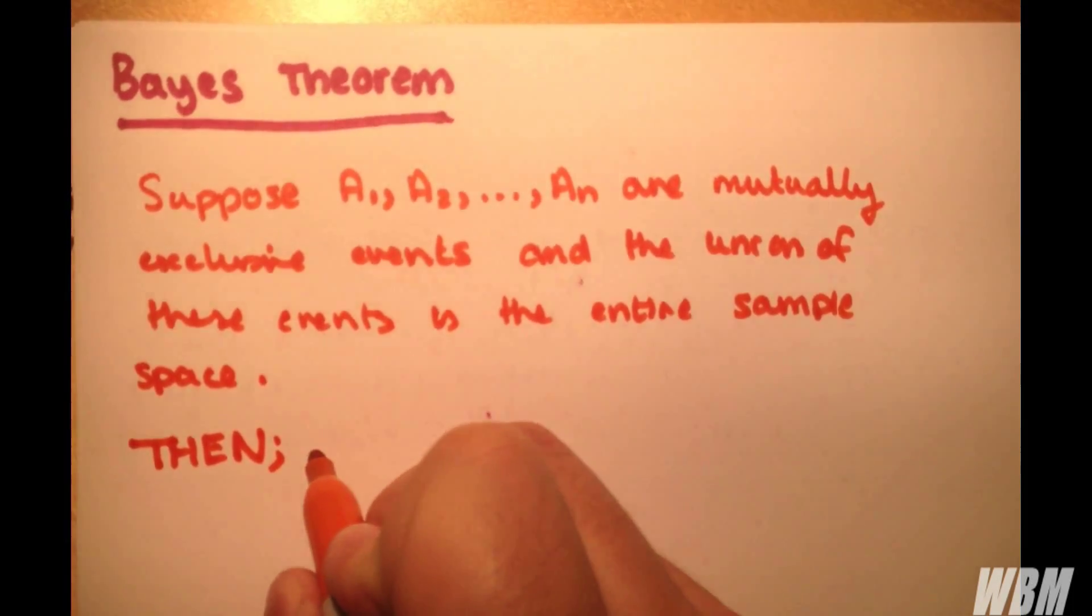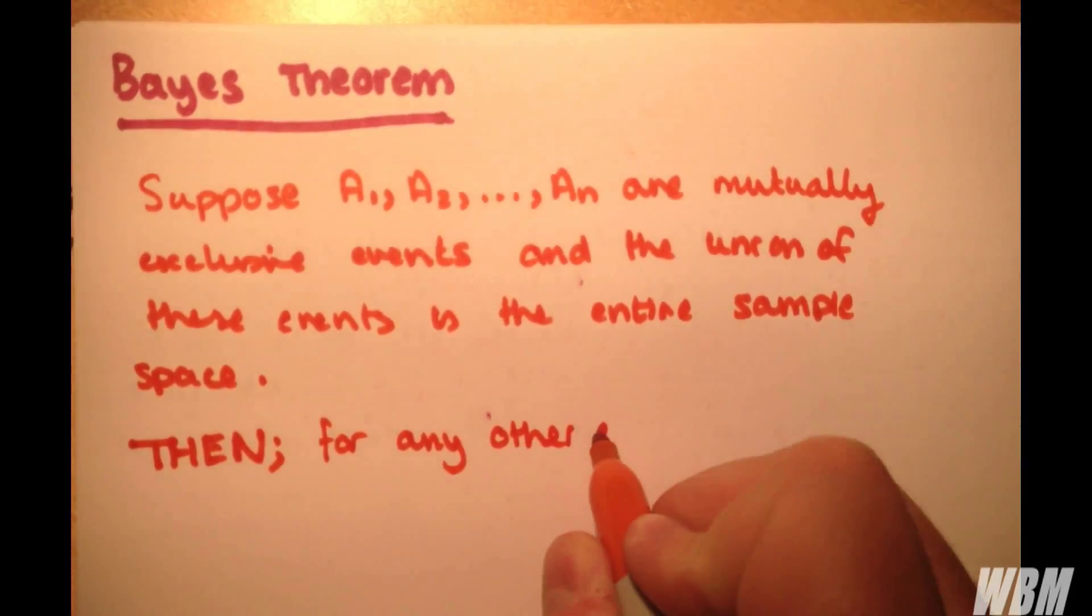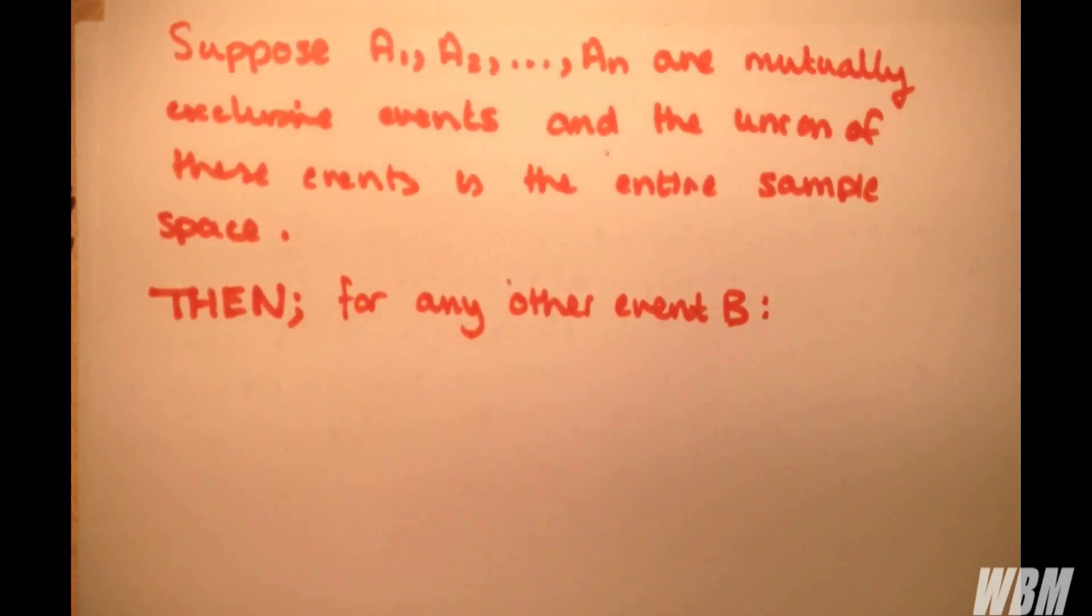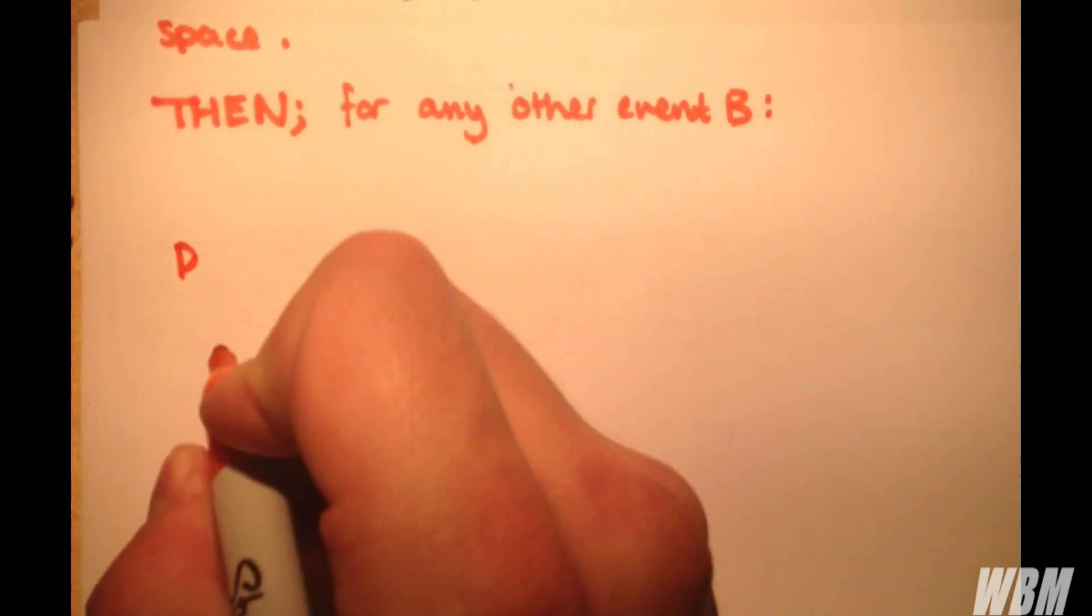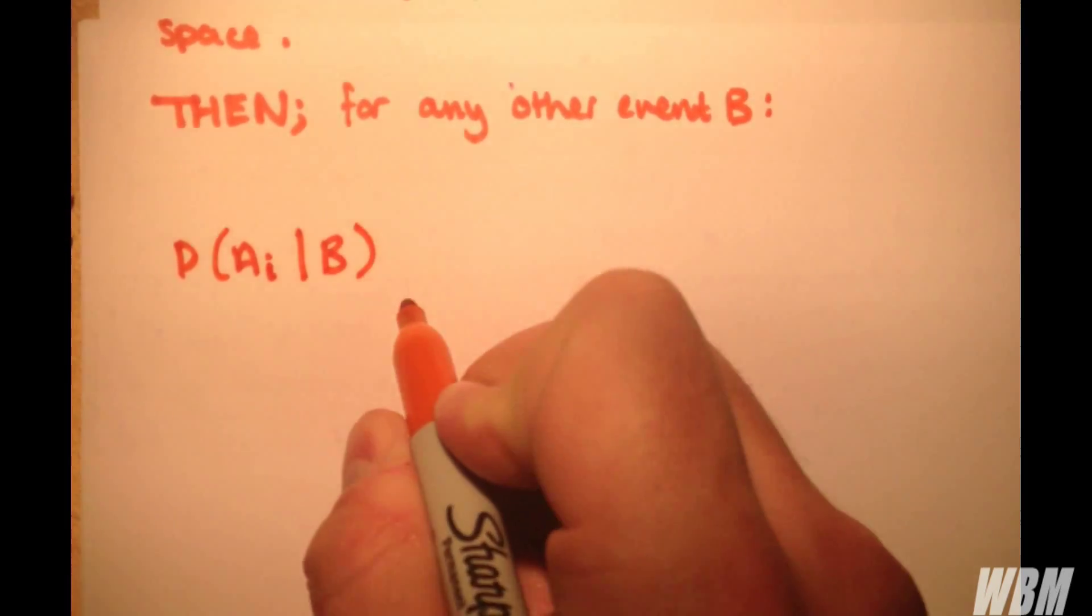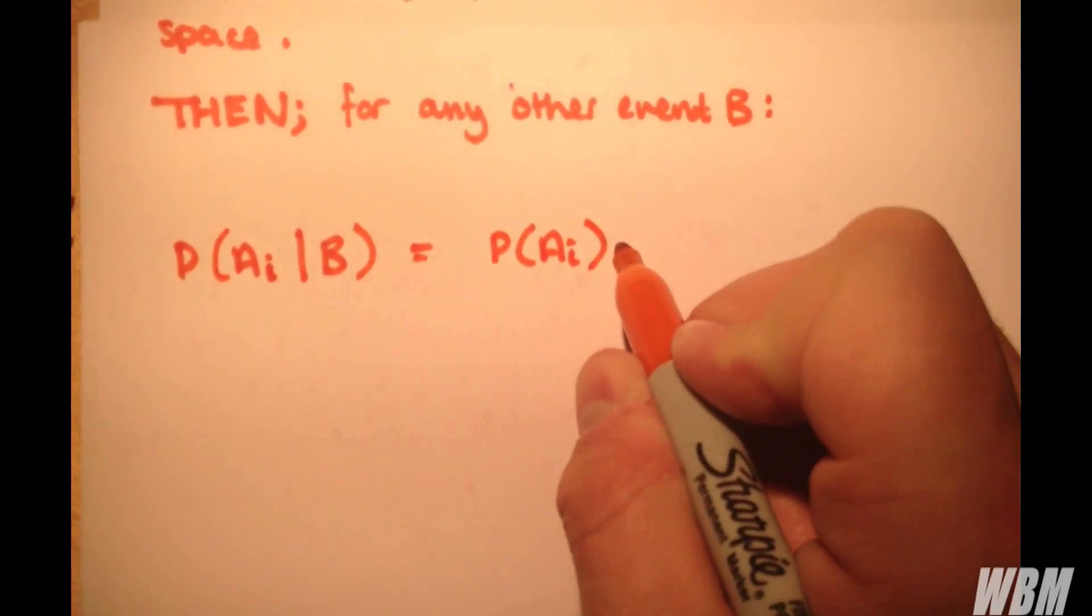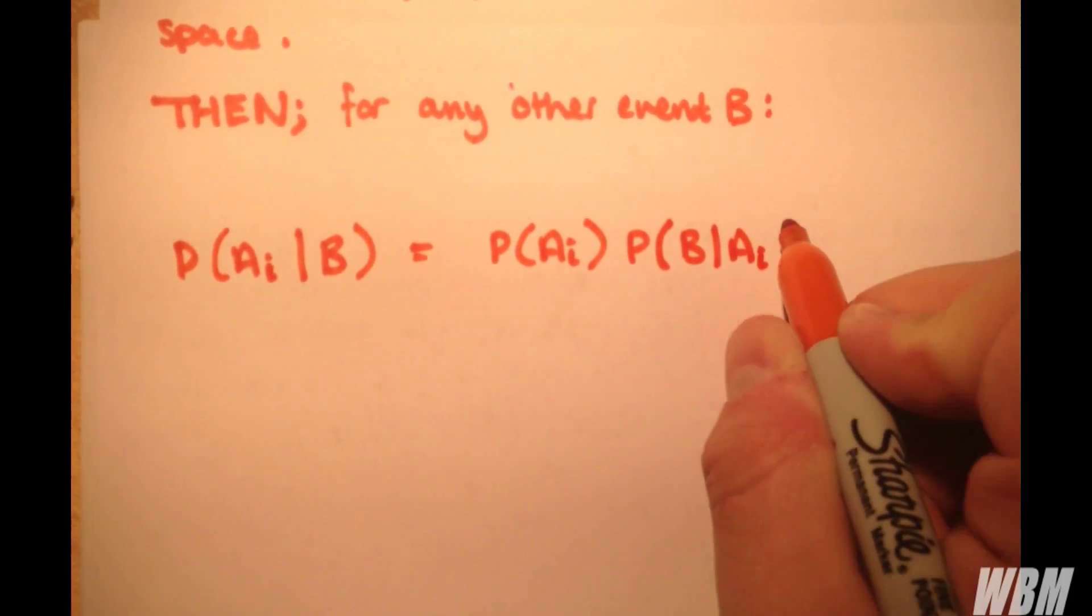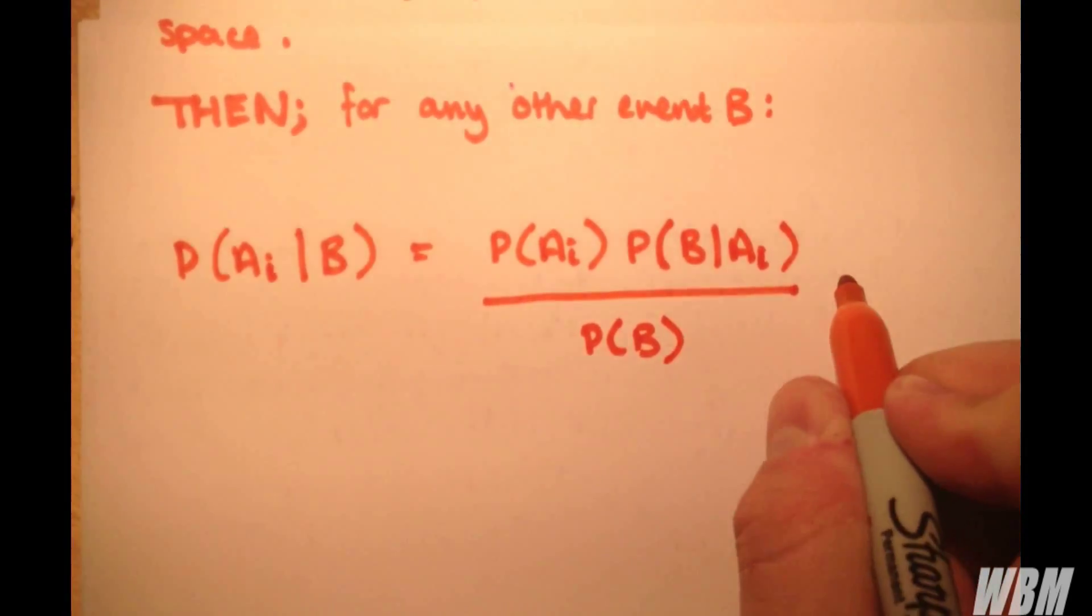Then for any other event B, we can write the following, which is Bayes' theorem: the probability of AI given probability of B is equal to the probability of AI times by the probability of B given that AI has happened, all divided throughout by the probability of B. It's very simple, and as you can see here...